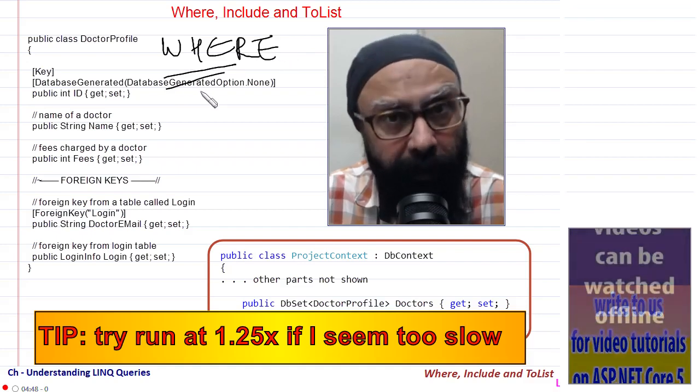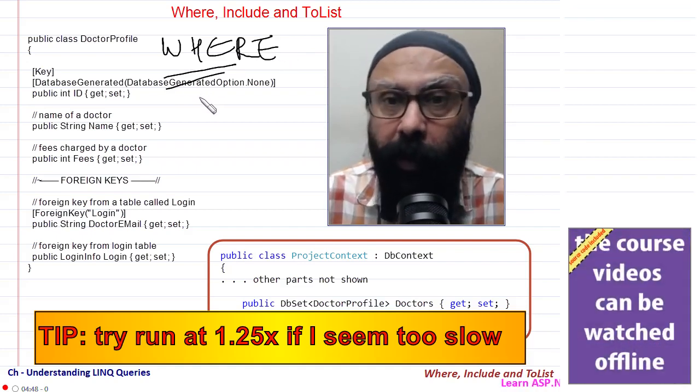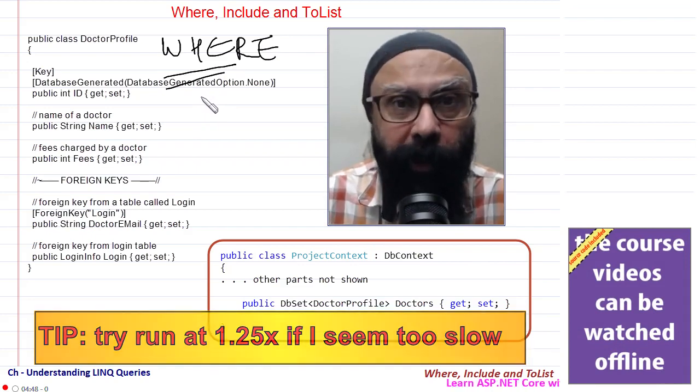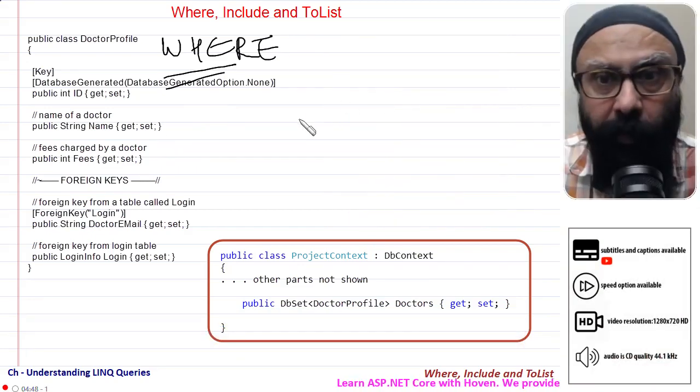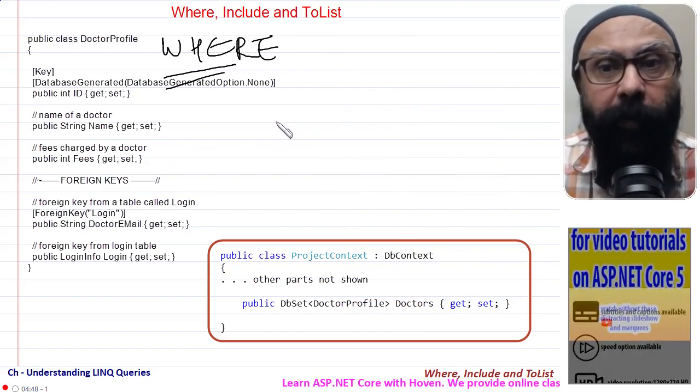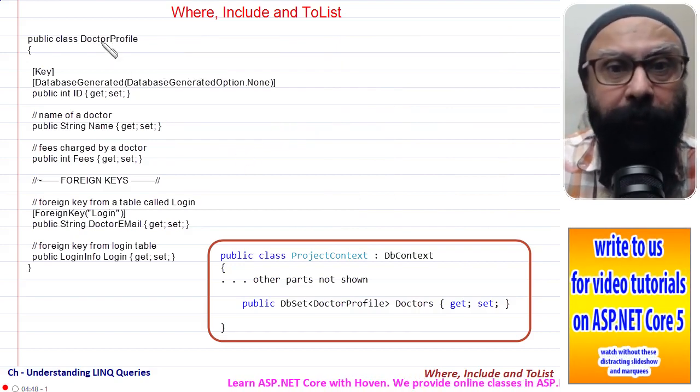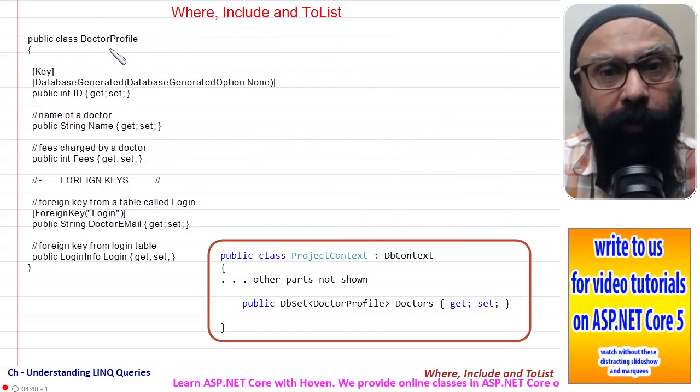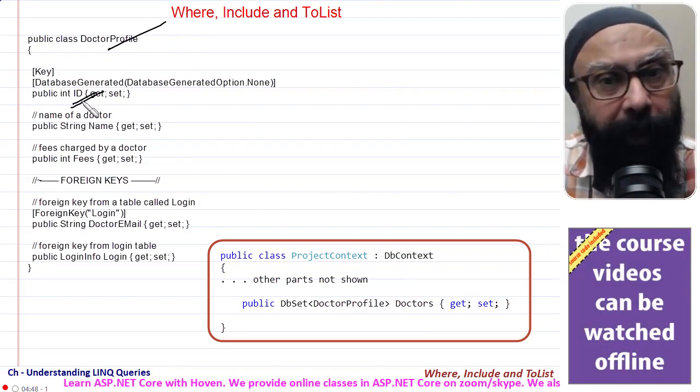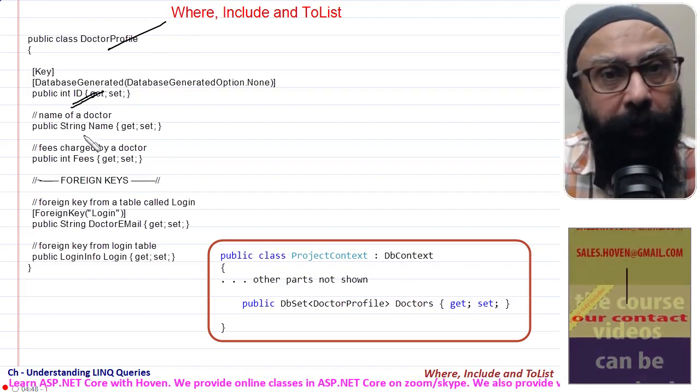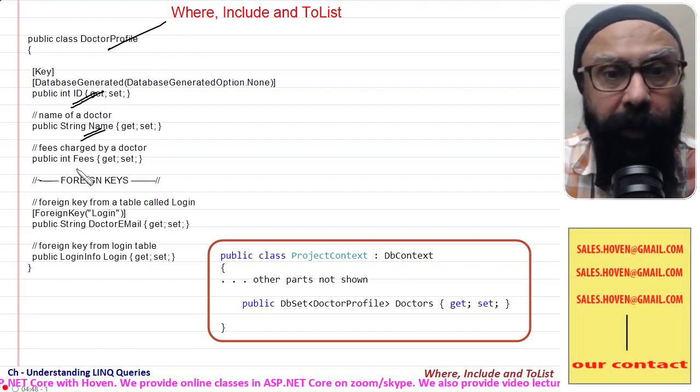SQL that you must already be aware of. Let us now see how to do the same thing in EF Core using the LINQ functions. For this, I will assume that my model looks something like this: we have a public class DoctorProfile and there is a primary key, the ID, there is a property called Name.